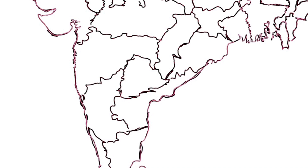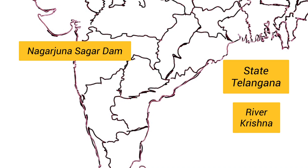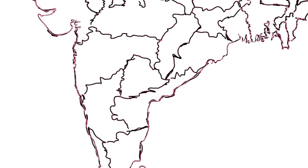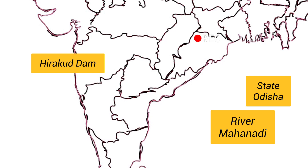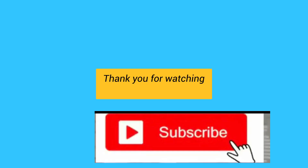The next dam is Nagarjunasagar Dam. It is located in the state of Telangana, on the river Krishna. The next dam is Hirakud Dam. It is the longest dam in India, located in Odisha, on the river Mahanadi.